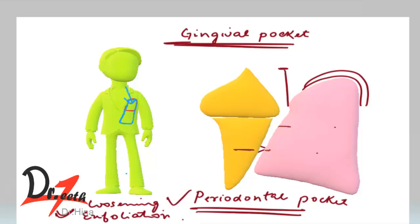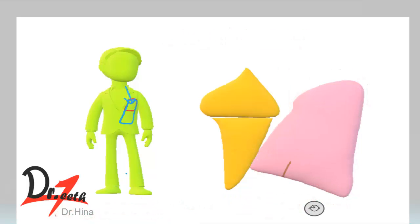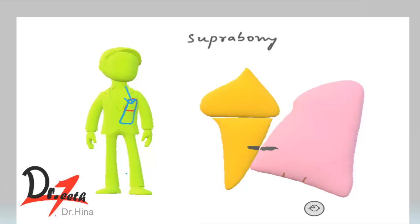Now the periodontal pocket is also of two types. Here we have the alveolar bone. When the base of the pocket is coronal to — meaning above — the adjacent alveolar bone, it is called the supra-bony pocket. But when the alveolar bone is at a lower level and the base of the pocket is apical to, meaning below, the alveolar bone, this is called the infra-bony pocket.